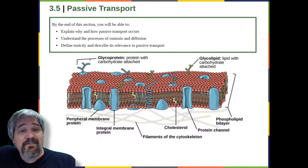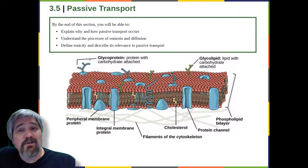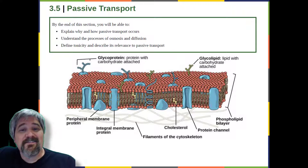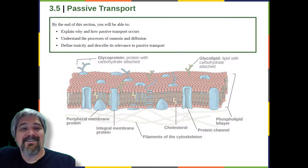Ions such as sodium, potassium, calcium, and chloride must have a special means of penetrating plasma membranes. Simple sugars and amino acids also need help with transport across plasma membranes.